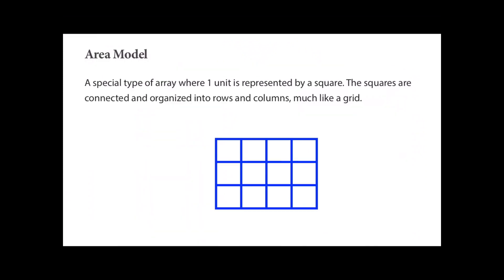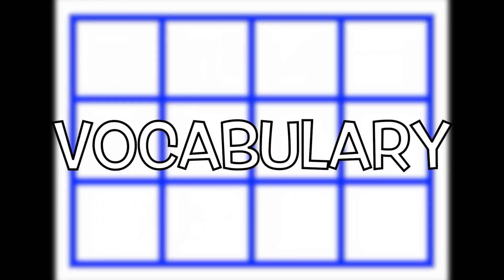An area model is a special type of array where one unit is represented by a square. The squares are connected and organized into rows and columns, much like a grid. Now that we've reviewed these academic vocabulary terms, let's get to work with partitioning rectangles.